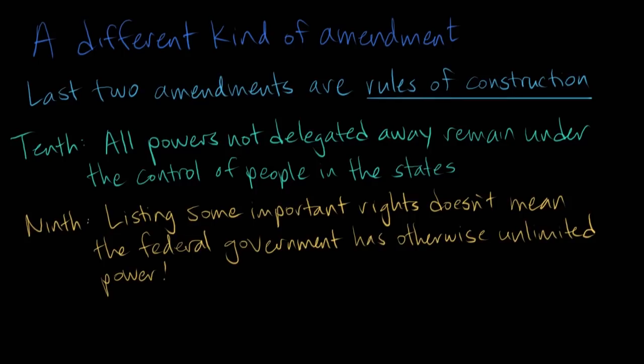The notion that you retain natural rights when you move from the state of nature to civil society is picked up in the language of the Ninth Amendment, which says that the enumeration of certain rights shall not be construed to deny or disparage others retained by the people. So one big theory of the Ninth Amendment is that it refers to these natural rights that come from God or nature and that you retain during the transition from the state of nature to civil society.